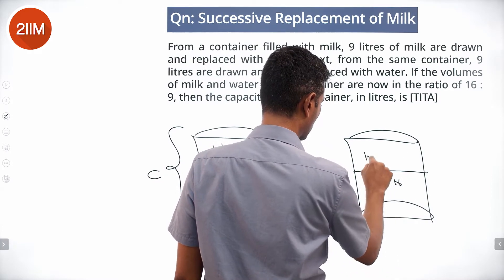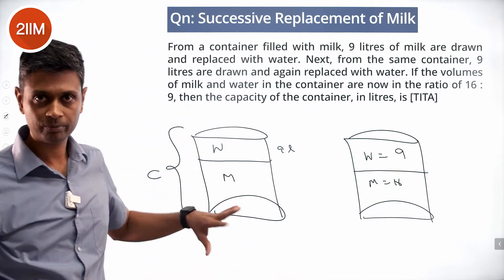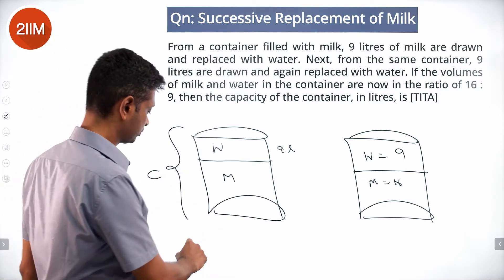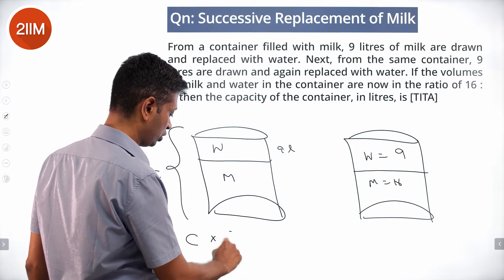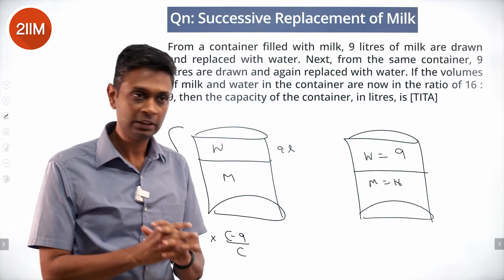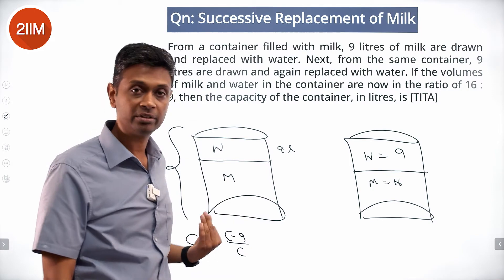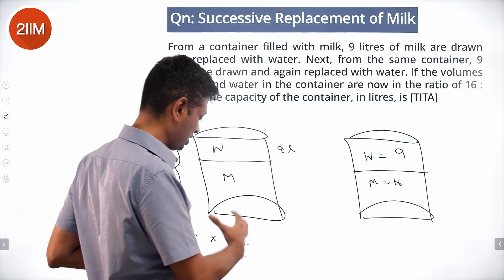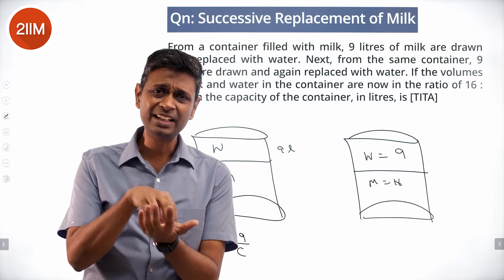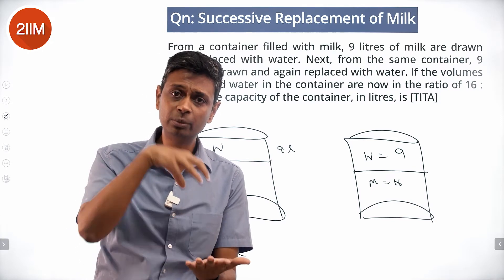Milk is 16, water is 9, ratio 16 to 9. What is the capacity C? Whatever C was, when 9 liters are taken out, the milk becomes C minus 9 by C of the original. From that stage again we are taking out 9 liters of the mixture, so milk becomes C minus 9 by C again. We are retaining C minus 9, so whatever milk was there originally, into C minus 9 by C will be retained.